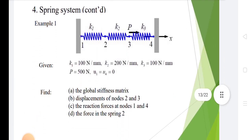This spring system has k1, k2, k3 with nodes 1, 2, 3, 4. Solve the problem where k1 equals 100 N/mm, k2 equals 200 N/mm, k3 equals 100 N/mm, P equals 500 N, and u1 equals u4 equals 0. Find the global stiffness matrix, displacements of nodes 2 and 3, reaction forces at nodes 1 and 4, and the force in spring 2.